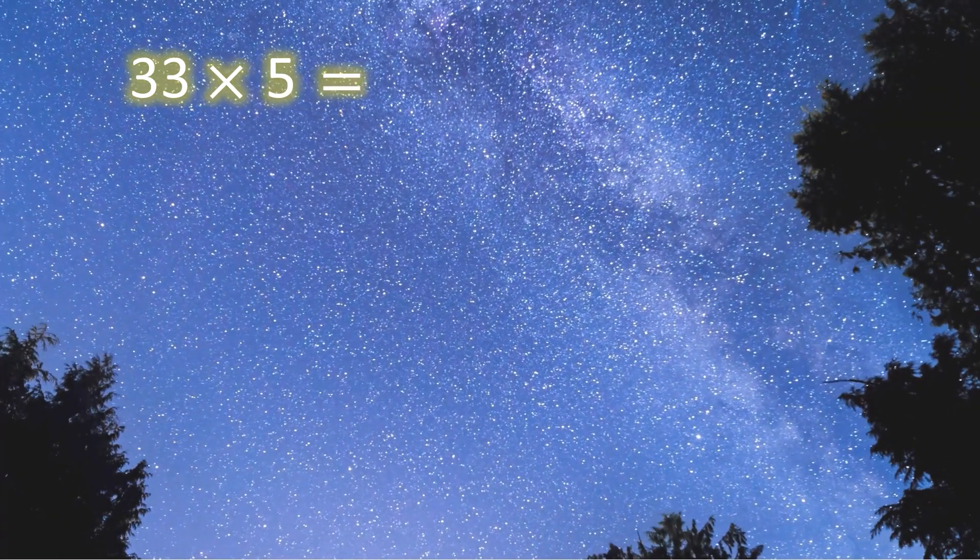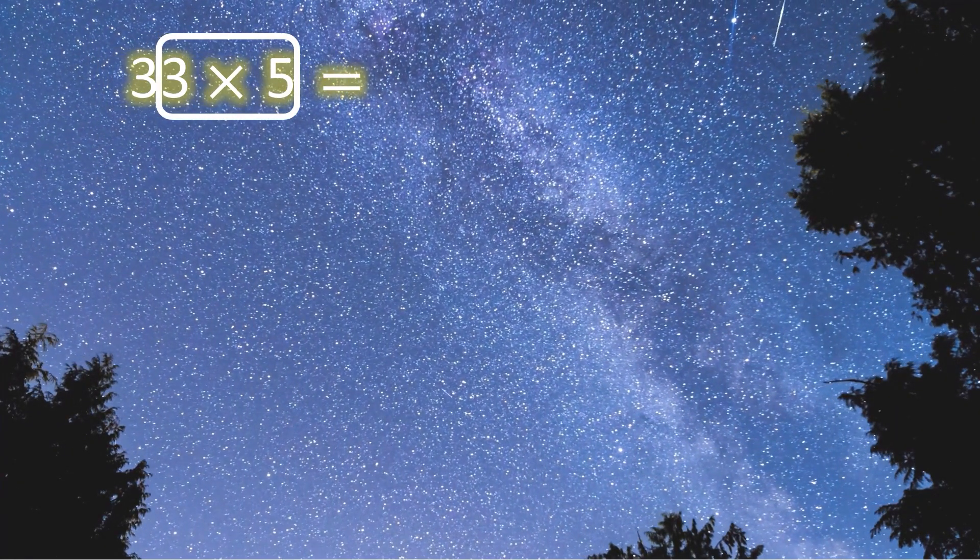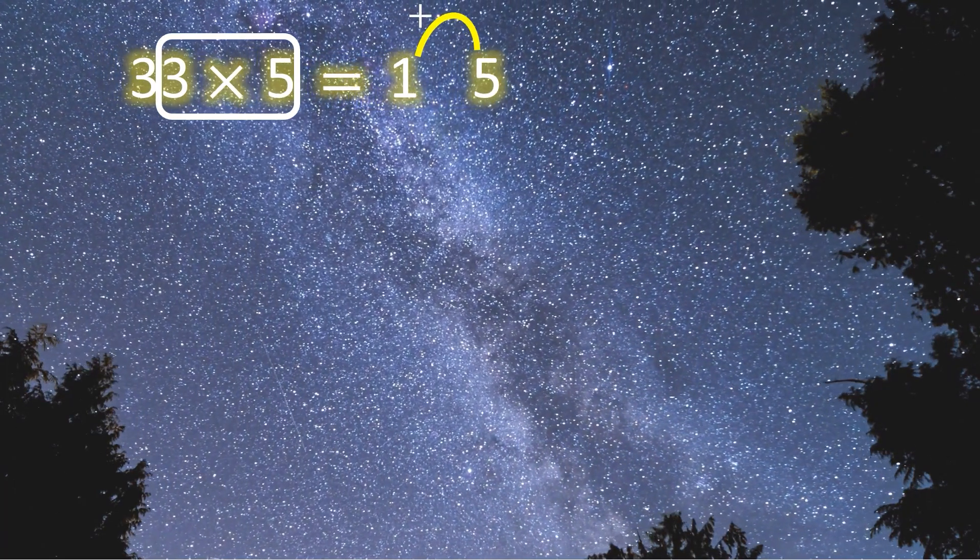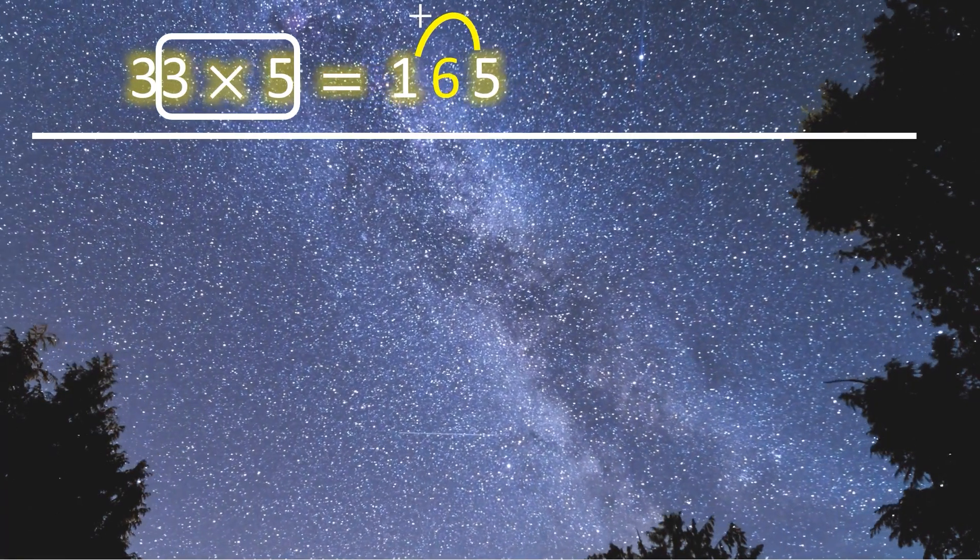33 times 5. First, we should multiply 3 by 5, which equals 15. Then, we should add 5 and 3. We put the result of the addition between the two digits.